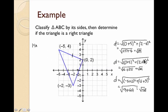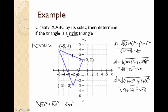Now we're going to figure out if it's a right triangle using the Pythagorean theorem. We check: (square root of 29) squared plus (square root of 29) squared — does that equal (square root of 58) squared? We get 29 plus 29, and that does equal 58. So yes, it's an isosceles right triangle.